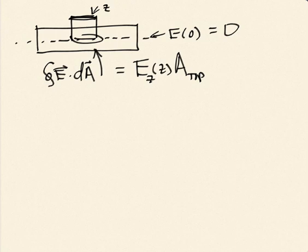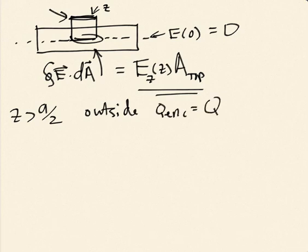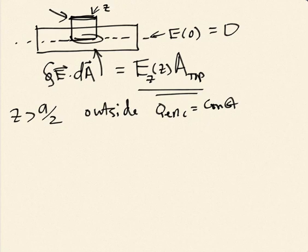Now let's do the full calculation using this pillbox with one side at z equals 0. For z greater than a/2 — outside the slab — Q enclosed is constant because no matter how high we move the top surface, the bottom stays at z equals 0 and we're always enclosing the same charge. The Q enclosed doesn't change once we're above the slab.